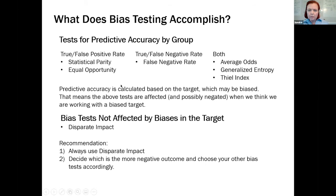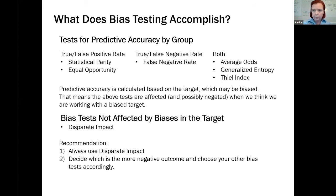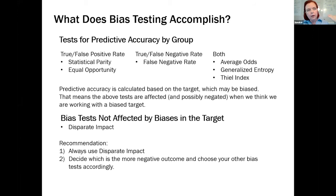You'll want some other bias tests as well to understand what your particular model is doing. Pick the negative outcome and choose your tests accordingly. If falsely assigning people to the negative case is really bad, use tests that focus on the false negative rate. If accidentally assigning people to the positive case is really bad, focus on tests with the false positive rate. If you're just worried about predicting accurately — like in marketing models — then things like average odds, generalized entropy, and Theil index look at overall predictive accuracy.